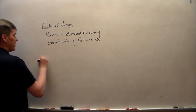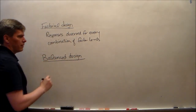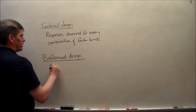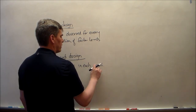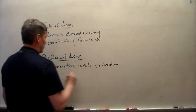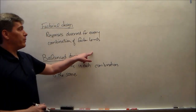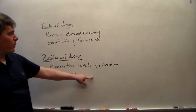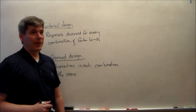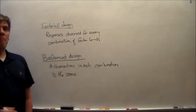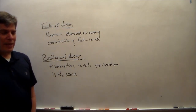Next, let's define balanced design: the number of observations in each combination is the same. It's a balanced design if we observe 3 in A1, 3 in B1, 3 in C1, 3 in D1, 3 in A2, 3 in B2, 3 in C2, 3 in D2, 3 in A3, 3 in B3, 3 in C3, 3 in D3. It's not balanced if the counts differ across combinations.